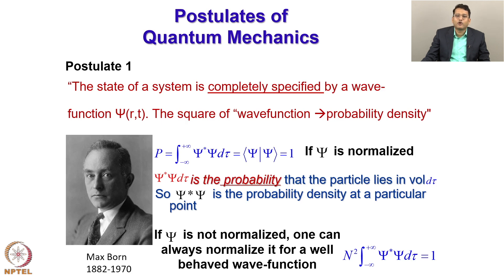If psi is not normalized, one can always normalize it for a well-behaved wave function by using the normalization relation. Now the consequence is that because psi star psi is related to the probability density, it leads to certain restrictions on the properties of psi.